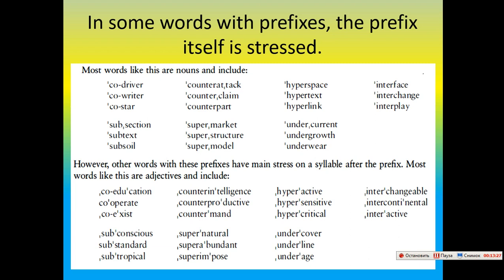However, other words with these prefixes have main stress on the syllable after the prefix. Most words like these are adjectives and include: co-education, co-operate, co-exist, subconscious, substandard, subtropical, counterintelligence, counterproductive, supernatural, superabundant, superimposed, hyperactive, hypersensitive, hypercritical, undercover, underlying, underage, interchangeable, intercontinental, interactive.